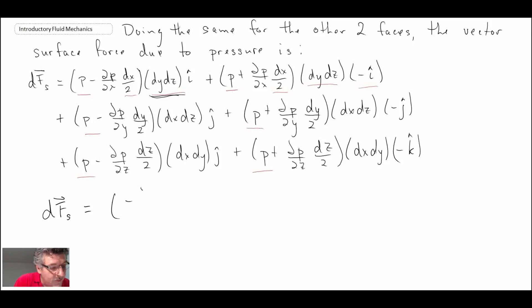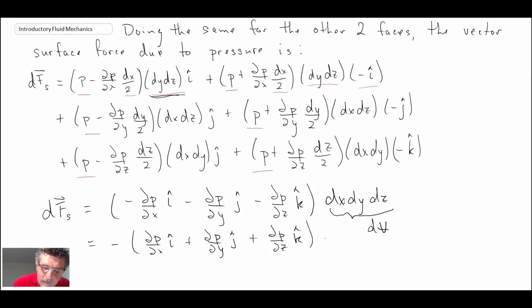We can rearrange this and get the vector surface force due to pressure as the following. It's multiplied by DX, DY, DZ, which happens to be the volume of the fluid element. The other thing we can notice, if I pull the minus sign out and rewrite this, this term here is nothing more than the gradient of pressure. The gradient operator takes a scalar and converts it into a vector field.